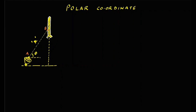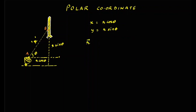So if we have to measure in terms of x and y the position of this rocket, how will we measure? I can say that x is equal to r cos theta. So x will be equal to r cos theta and y of this rocket is equal to r sin theta. The position vector can be represented as x î plus y ĵ, which will be equal to r cos theta î plus r sin theta ĵ.